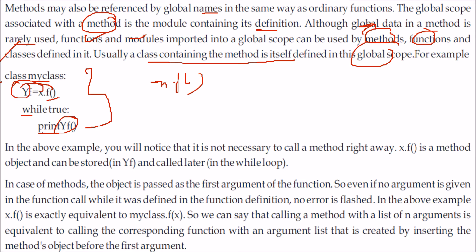In the case of functions or methods, the object is passed as the first argument of the function. So even if no argument is given in the function call, there will be no error, because calling `x.f()` is equivalent to calling `MyClass.f(x)`. We can say that calling a method with a list of n arguments is equivalent to calling the corresponding function with an argument list created by inserting the method's instance object before the first argument.